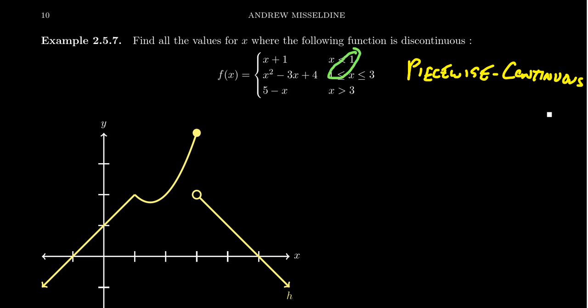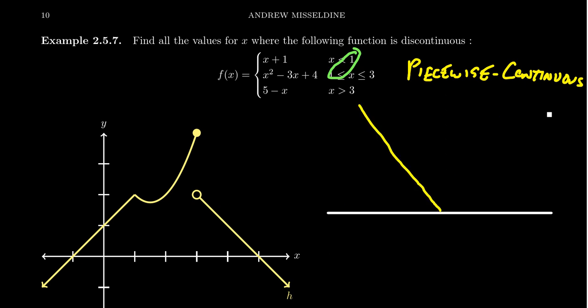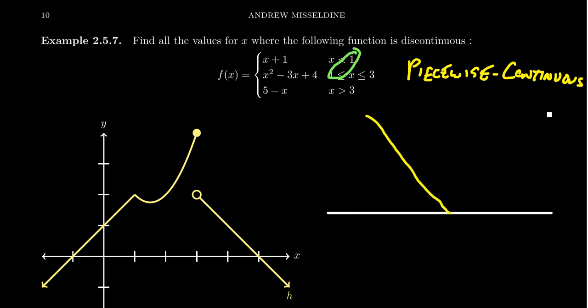Look at these numbers 1 and 3, where it switches between pieces. A function is continuous if you could draw it essentially with one continuous stroke of your pen — if you can draw the whole picture without having to pick up your pen. The absolute value function is an example: it's okay to stop and switch directions, as long as you don't have to pick up your pen.